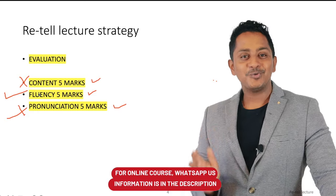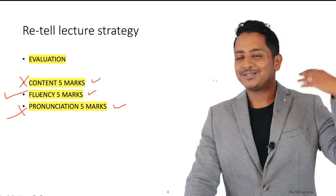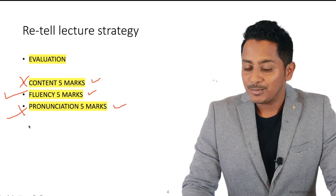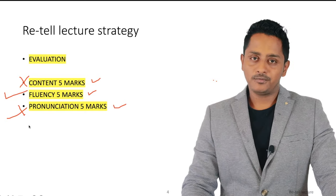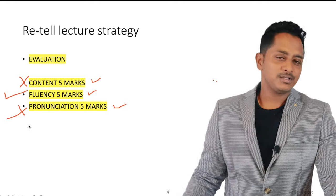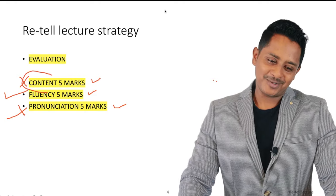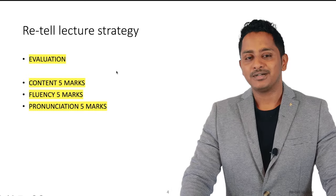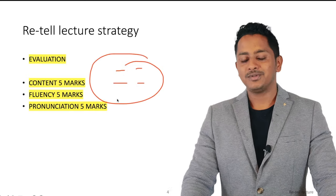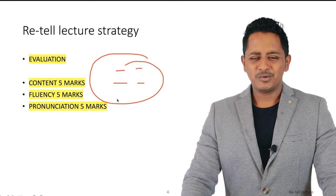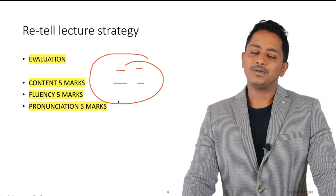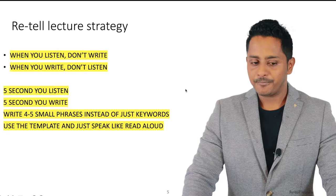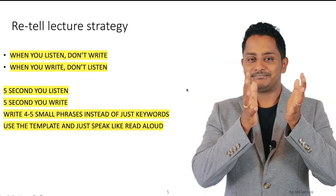Trust me — content may not be a huge priority here. You do have to give some content, but it's not really the top priority. The top priority is fluency. Whatever way you speak in Read Aloud, the same way you should speak in Retell Lecture — no exaggerations, natural speed, not fast, not slow, no hesitations, no fumbles. Let it flow like water in a river. Pronunciation is about clarity — open your mouth and speak clearly.